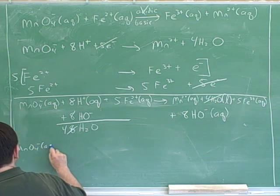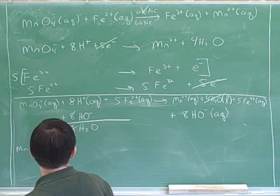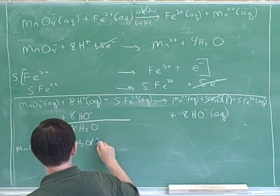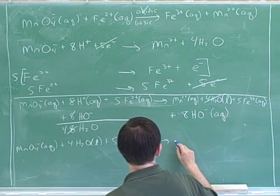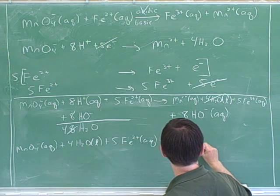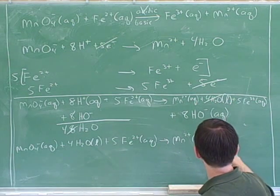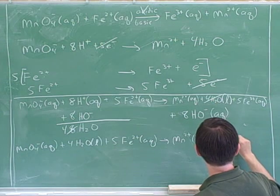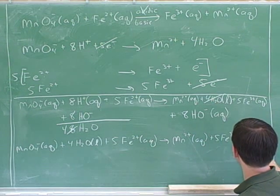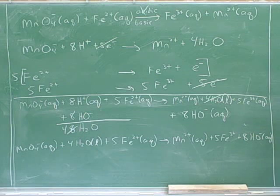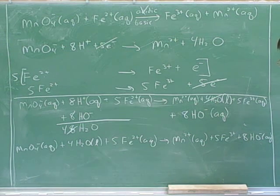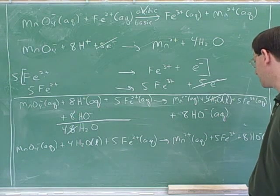So now let's write down what the equation will be. MnO4 minus aqueous plus, not protons anymore, but four waters. Plus five irons gives Mn2+ aqueous. These waters are gone, plus five irons plus eight hydroxides. It might be a good idea to again double check that all the elements balance and all the charges balance. But if we didn't make any mistakes, then everything should balance.